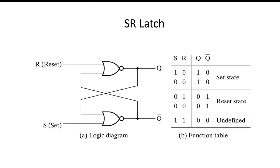Let's start. The SR latch has a simple implementation using two NOR gates, and it has two states: the set state and the reset state. For the set state, S is 1 and R is 0. Even if we change from 1-0 to 0-0, it will hold the set state. Let's put S=1 and R=1 in Logisim.